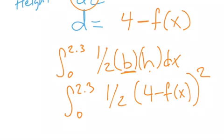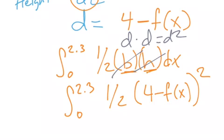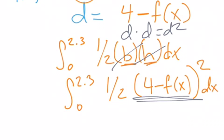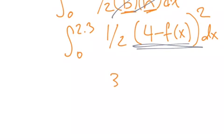...squared, because the base and the height are both nothing more than D, D times D is D squared, so this value here is D squared. And if you do that correctly, you should get roughly 3.574.